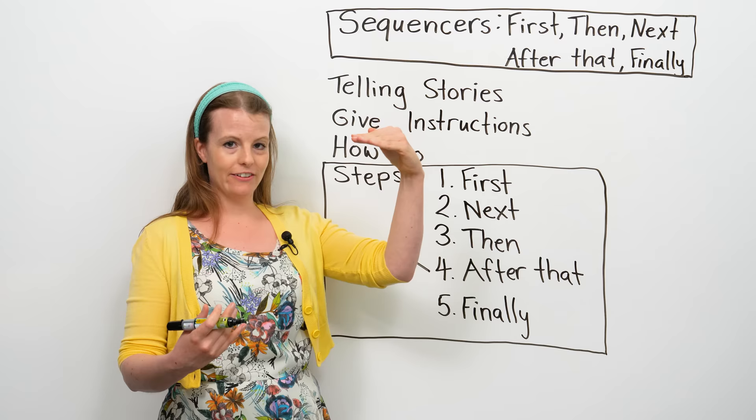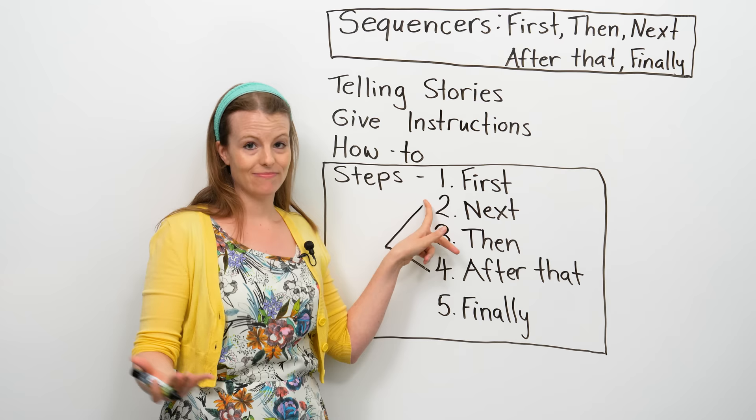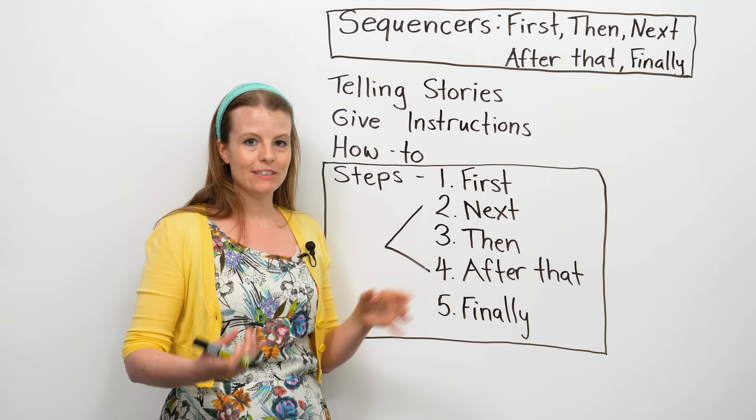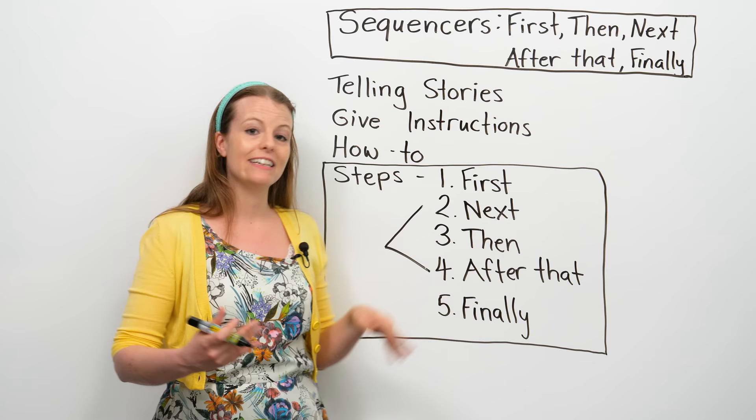Then we have these three: next, then, and after that. They all mean the same thing, so you can use any of them as your second, third, or fourth step. You can use these interchangeably — the order of these three doesn't matter. So: first, then, next, after that, finally. We can use sequencers in that way.